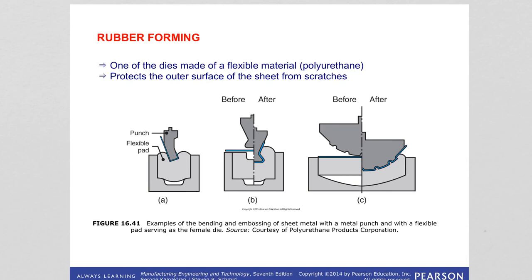Rubber forming uses dies that are made of rubber-like flexible material such as polyurethane membrane. In this image you can see the flexible pad and the dies — here it is the polyurethane flexible material. This helps protect the surface of the sheet from scratches during the bending operation. Polyurethanes are used because they have high abrasion resistance, fatigue life, and resistance to cutting and tearing.